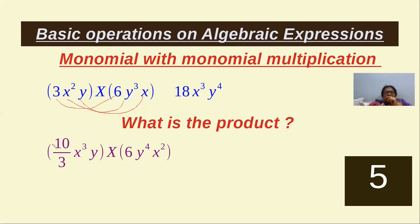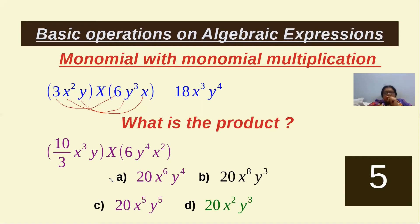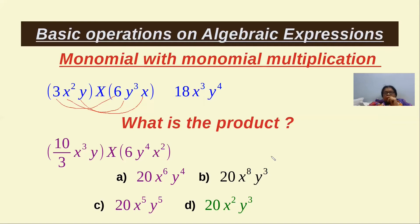This is a multiplication of monomial with monomial. I'll give four options — A, B, C, D — and you have to tell me which one is correct. Your time starts now; I'll give five seconds. The answer is: 3 × 1 and 3 × 2 gives 6.